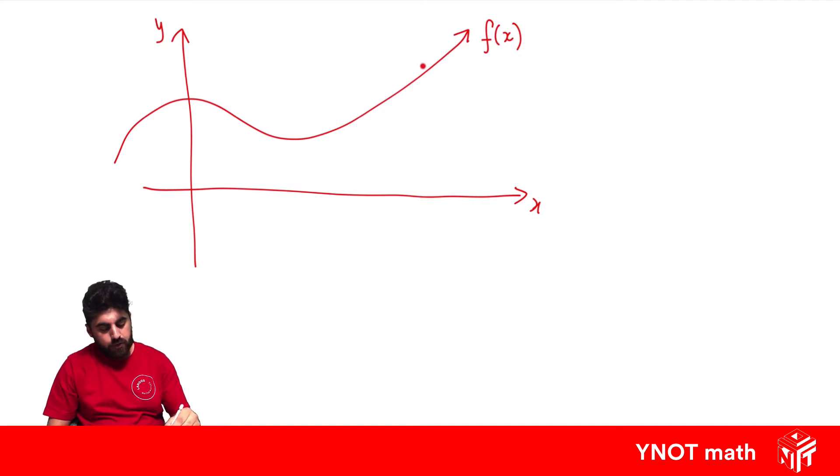So, as we move across, a good way to define how it's changing is to actually look at the gradient of a tangent at a point. So, if we're looking at this point here and we draw a tangent, the gradient of this tangent would tell us something about how this function is changing as we move across.